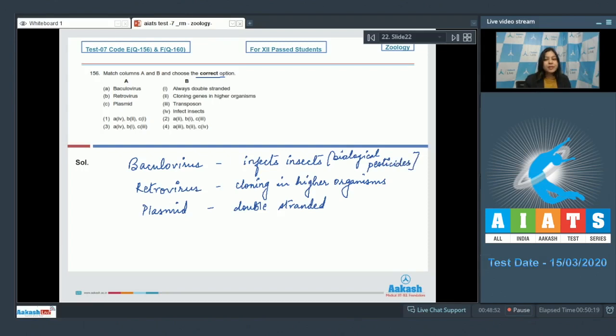These baculoviruses inhibit larval development in insects. Retroviruses are used as vectors as they can carry larger pieces of DNA. Therefore they are used for cloning in higher organisms. Number three, plasmid: a plasmid is extra chromosomal DNA which is always double stranded and circular.